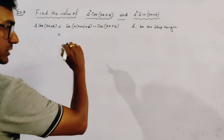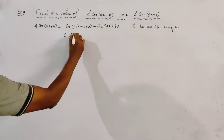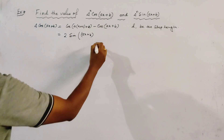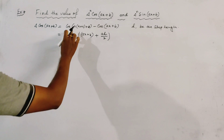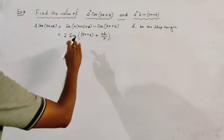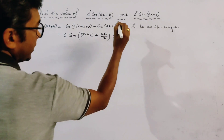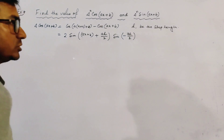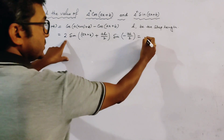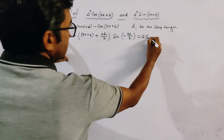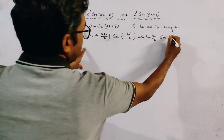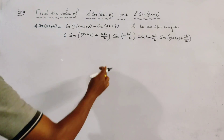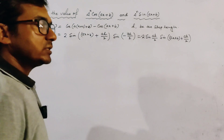Now use the formula for cos C minus cos D, which is given by 2 sin((C + D)/2) sin((D - C)/2). Applying this, we get 2 sin(ah/2) sin(ax + b + ah/2), where (C + D)/2 gives ax + b + ah/2 and (D - C)/2 gives -ah/2.